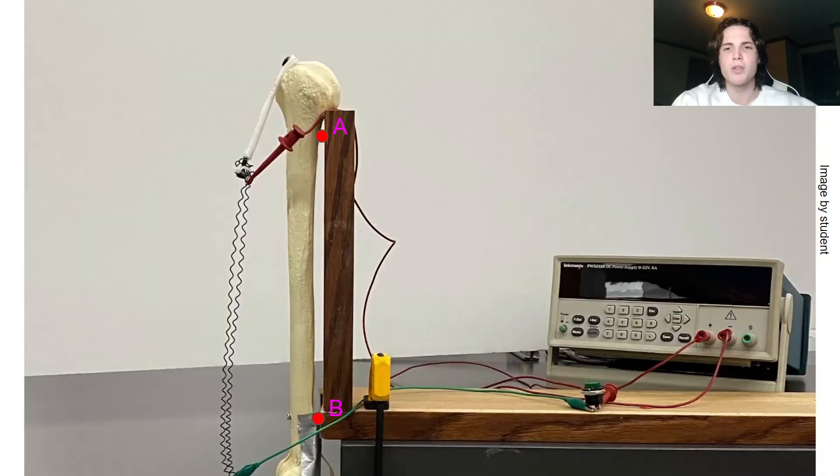The humerus of the joint is connected to the wood construct at points A and B. The wood is then clamped to the table to remove any unwanted movement from the construct.